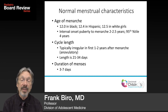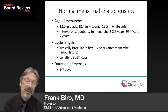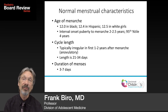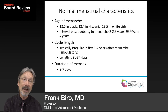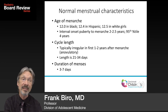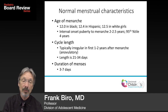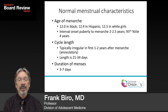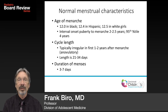The 95th percentile for that interval is four years. So if you look at a record and someone had breast development five years ago and still hasn't had menarche, that is abnormal. Normal cycle length: in the first one to two years after menarche, cycle length can be extremely variable because many of the cycles are anovulatory.